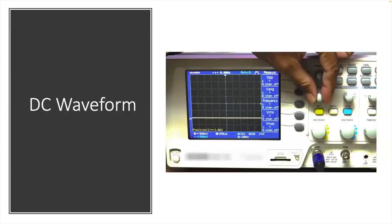A DC waveform is very simple. You can see this on an oscilloscope because it does not oscillate — it's constant. It is also polarized, where an AC waveform is constantly swinging positive and negative 60 times a second. A DC waveform has a positive and a negative polarity. Whenever you see these waveforms, understand that it is constant and does not change at all. So if we're looking at 24 volts, the waveform will be at 24 volts and it'll just be constant.